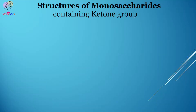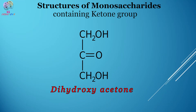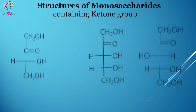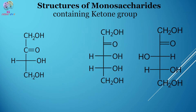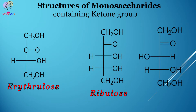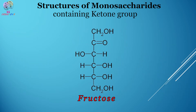Moving on to monosaccharides containing a ketone group: the first is dihydroxyacetone, which is again a triose — you can see there are only three carbon atoms. The next is erythrulose, while ribulose and xylulose are pentoses. Fructose is a hexose — keep note of the position of the hydroxyl group on the third carbon atom.